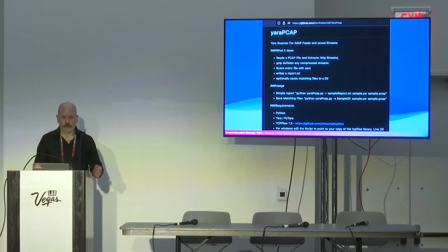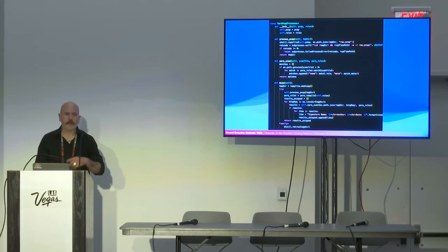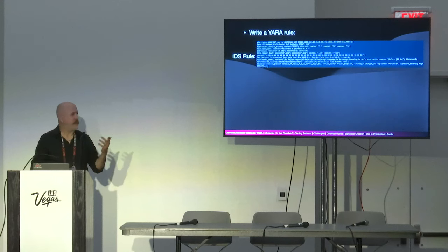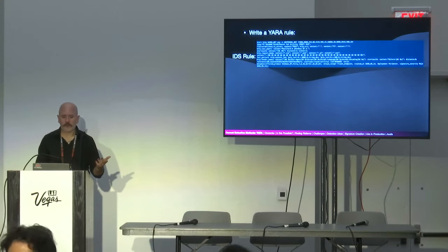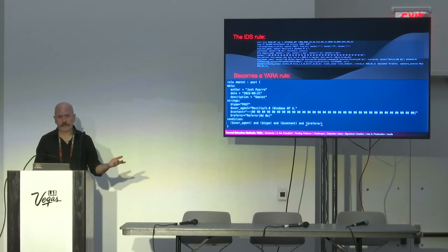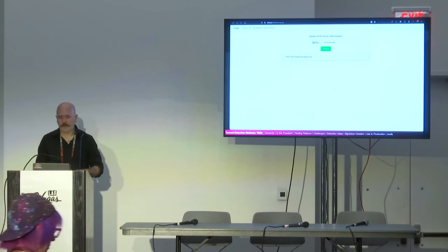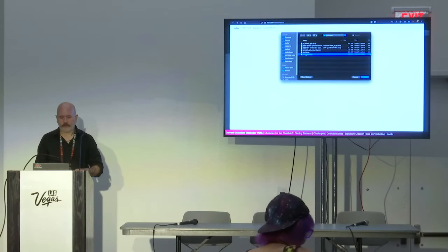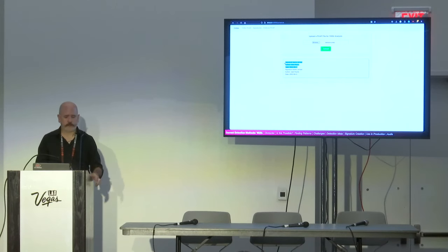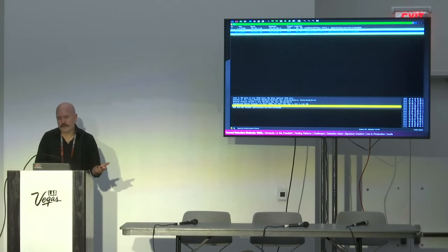I found that someone wrote a tool called Yara PCAP. I took that and modified it - my code will be linked at the end. I modified it to include it as a proof of concept you can play with, where you can upload a PCAP and test it. How it works: you write a Yara rule based off an IDS rule. It becomes much simpler and easier to read - I'm looking for a POST, the user agent, certain content, the referrer information. When it sees all those things, it triggers. So it's possible to capture stuff over the network with Yara as a detection mechanism.